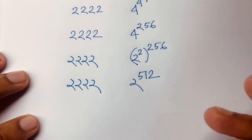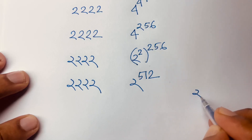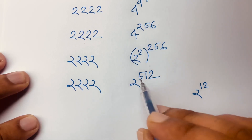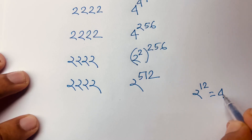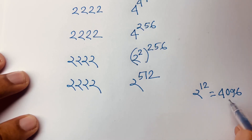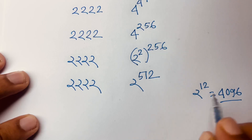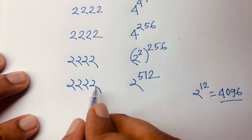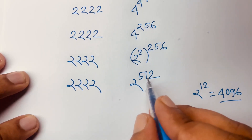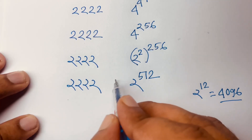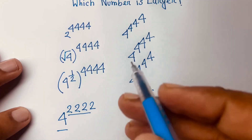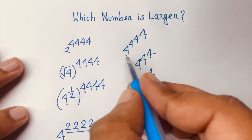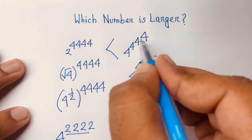Now comparing: 2 to the power 512 is an enormous number. Look — the right side's top exponent is just 12, not 512 — giving something like 4096. So the left exponent tower is much bigger. Therefore the larger number is 2 to the power tower — that is our answer, that is the larger number.